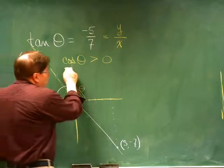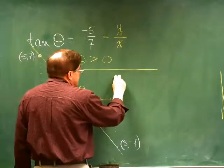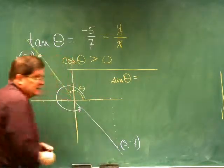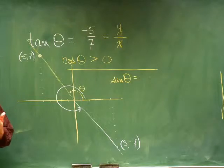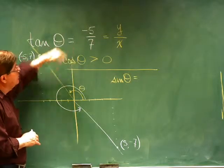So now we'd be able to say a lot of other things. If we were asked what is the sine of theta, we know that the terminal side has to be down here for two reasons, and it took two pieces of information to tell us that. The tangent was negative five-sevenths.